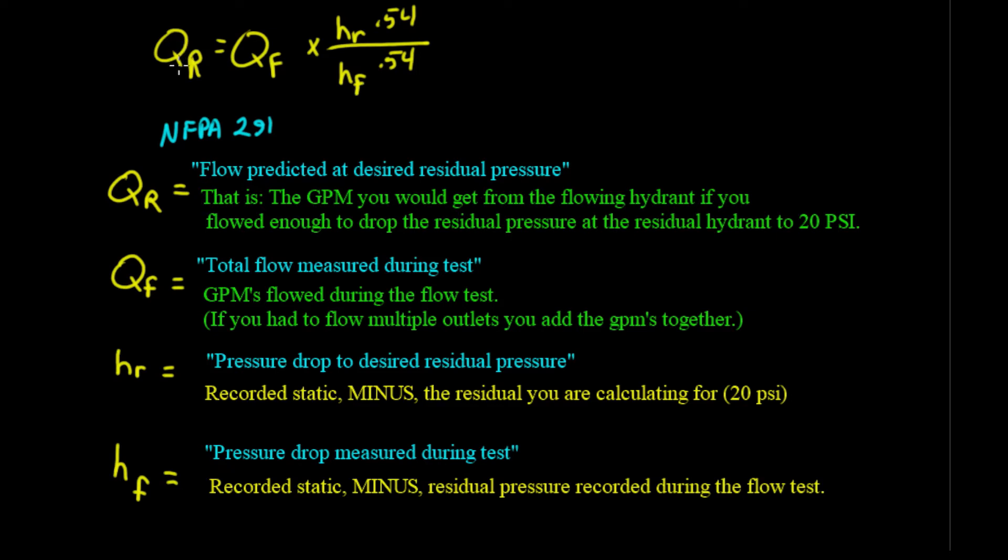What do the variables mean? QR, that's the gallons that we want if we drop it down to 20 on the residual hydrant. Now the QF is the actual gallons we flowed on the hydrant test just a minute ago. In this case, it's going to be 839.53 gallons. HR in this equation, that is kind of confusing. It's actually a word problem. It says pressure drop to desired residual pressure. But what you have to do is you take your recorded static minus the residual you're calculating for, which would be 20 PSI in this case. Do that. That's where you get HR.